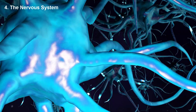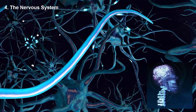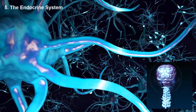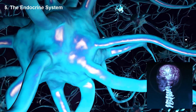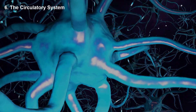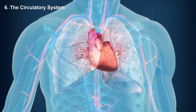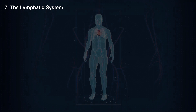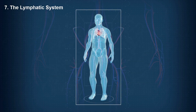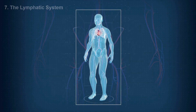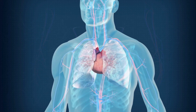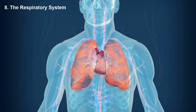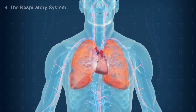The nervous system is the communication network and center. The endocrine system assists the nervous system with communication through message delivery. The circulatory or cardiovascular system carries blood and nutrients throughout the body. The lymphatic system works to transport fluids and fats and defends the organism against disease. The respiratory system exchanges gases as well as filters and transports air.